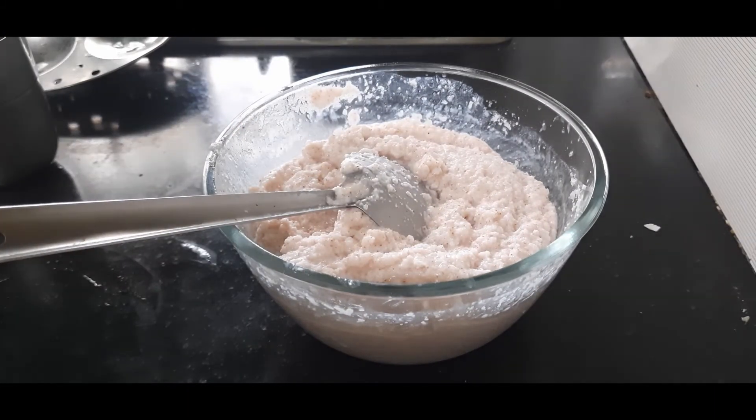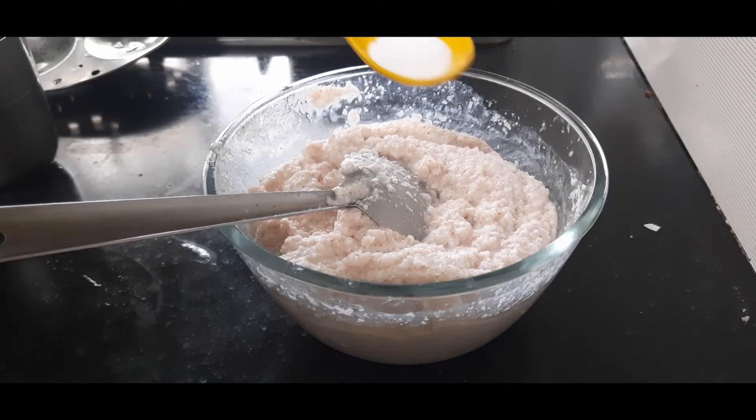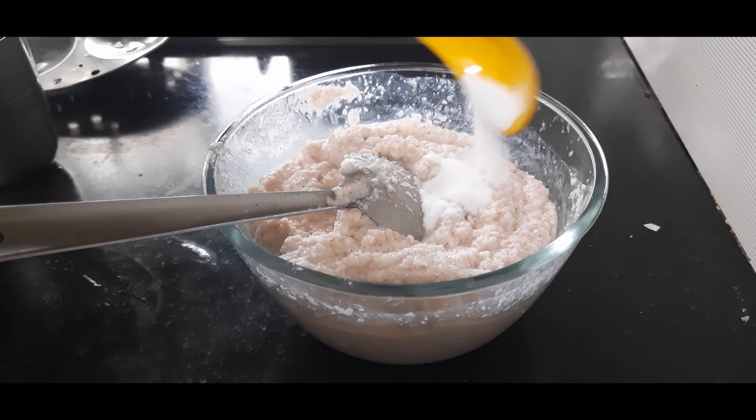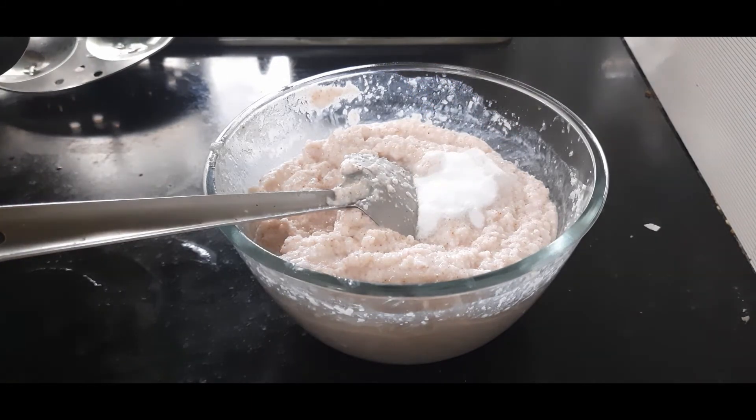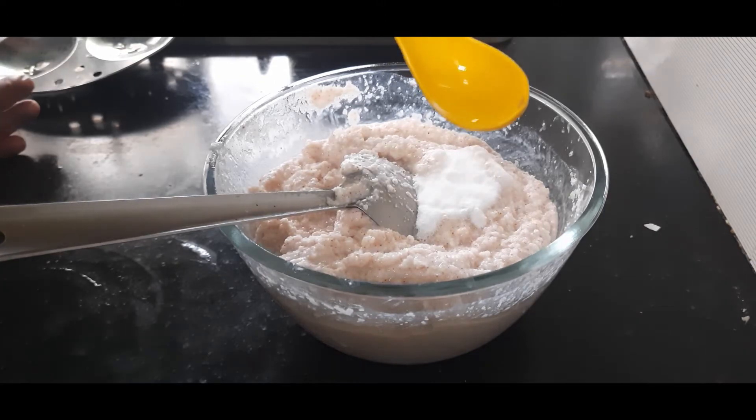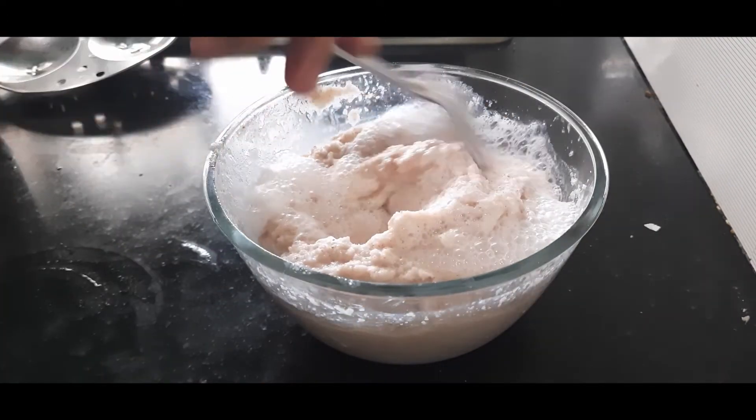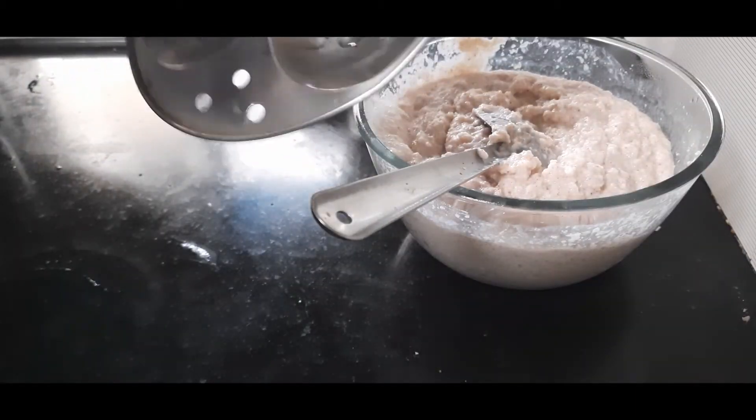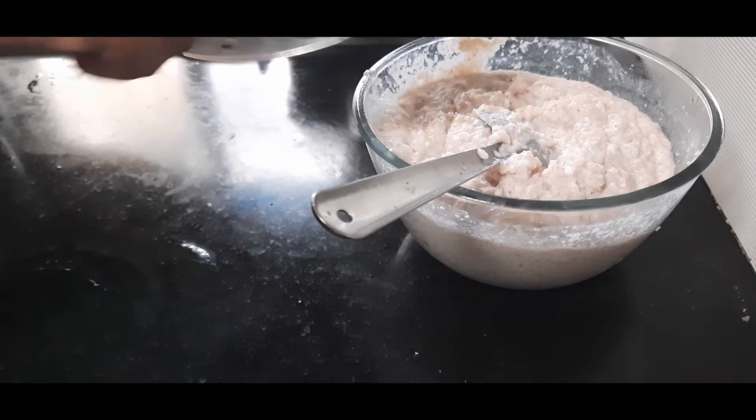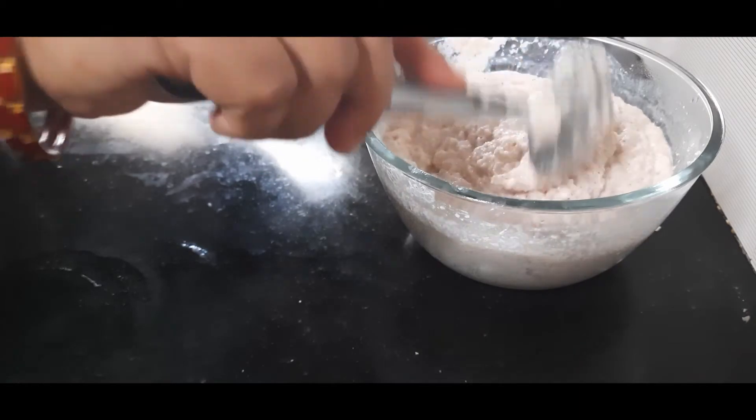So only one thing is remaining now, and that is enos fruit salt. I am adding one teaspoon of enos fruit salt here. Add just a little bit of water to activate it. Mix this, and do not over-mix. I have the greased idli molds ready, so now I'll fill this batter into the idli molds.